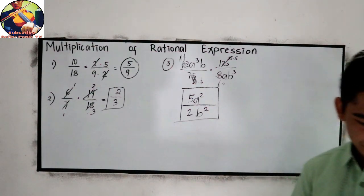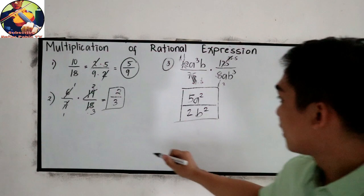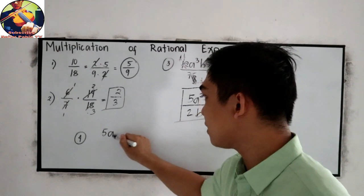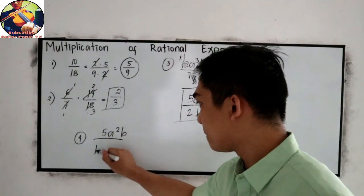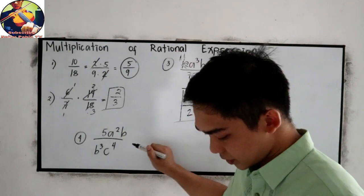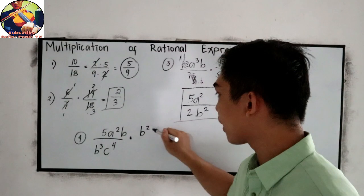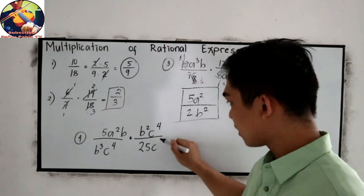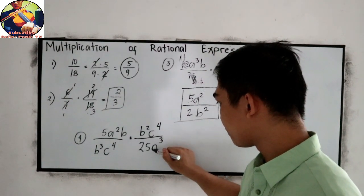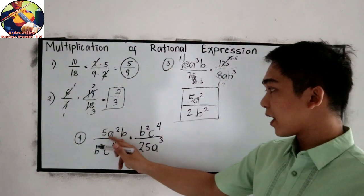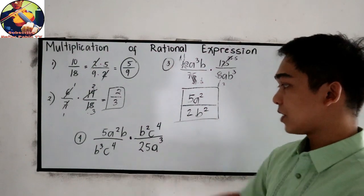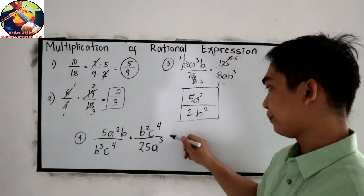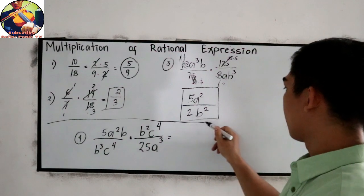Let's try this one, number 4. 5A²B all over B³C⁴ times B²C⁴ all over 25CA³.